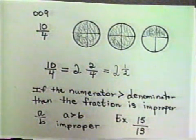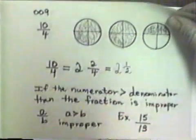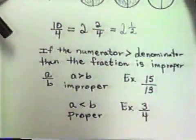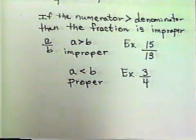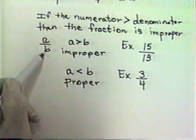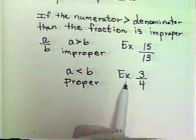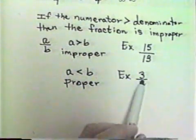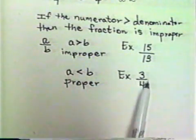Our wholes would be divided into 13 pieces if we did 15 thirteenths. If A is less than B, or our numerator is less than our denominator, we call the fraction a proper fraction. For example, three-fourths. Most of the fractions we've been looking at until this last fraction were proper fractions.